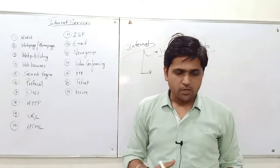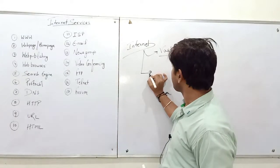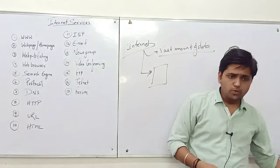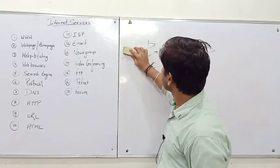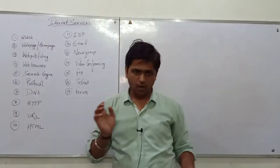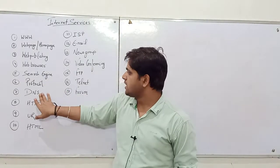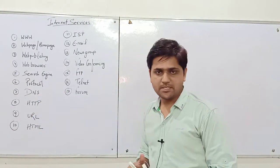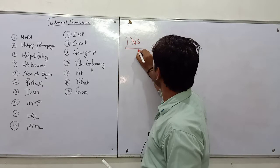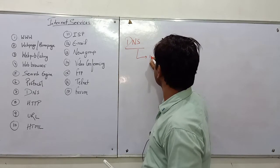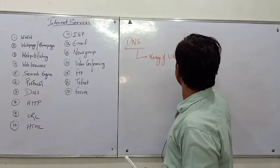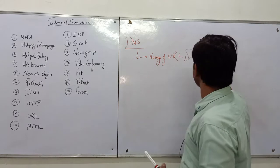A protocol is a set of rules and instructions followed by the internet for its proper working and for the convenience of the user. DNS stands for Domain Naming System. It is a service provided by the internet for the proper naming of URLs, or the domain name of a website.